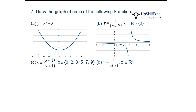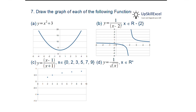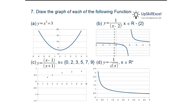Third, y = (x−1)/(x+1) for x ∈ {0, 2, 3, 5, 7, 9}: since x is a specific discrete set, we calculate y at each point and plot those specific points. Fourth, y = 1/√x, x ∈ ℝ⁺: as x approaches 0, y approaches infinity, and as x increases y becomes smaller and smaller.